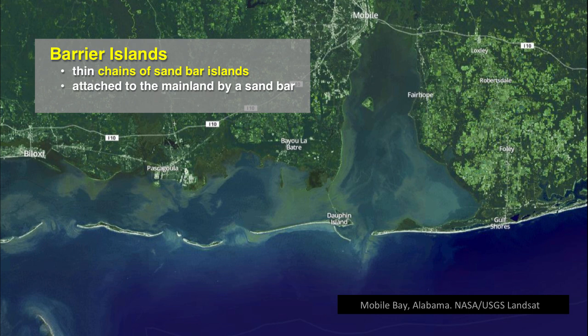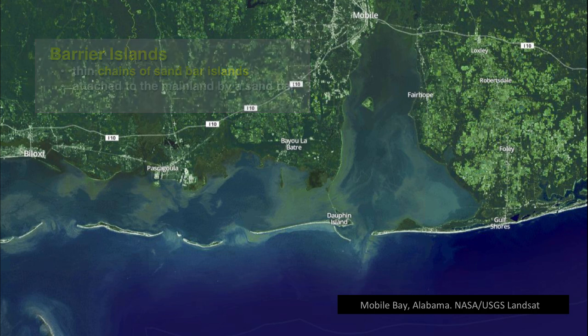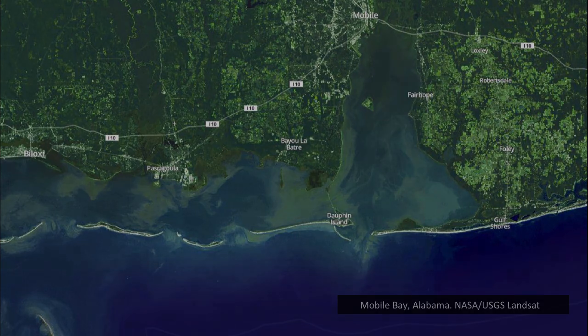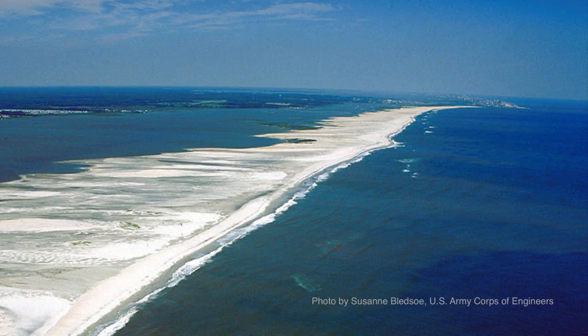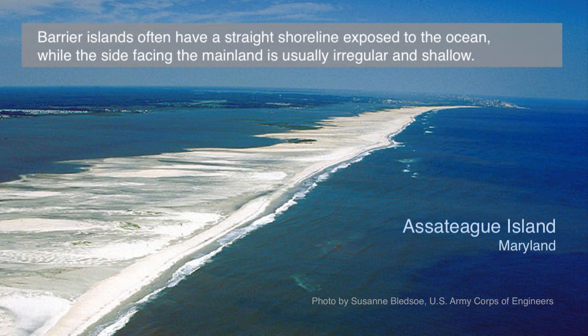We can also have deposition along submerged ridges or extensions of the mainland that go out into the ocean in the same way that a spit forms. Sometimes these long sandbars come to the surface in the form of barrier islands, and so you often see a long string of these islands. The ocean side of these islands tends to be smooth and straight, while the mainland side tends to be highly irregular and shallow.